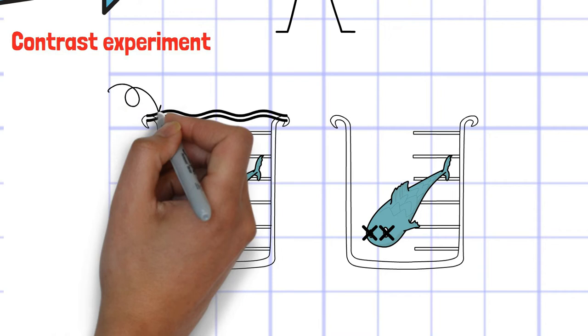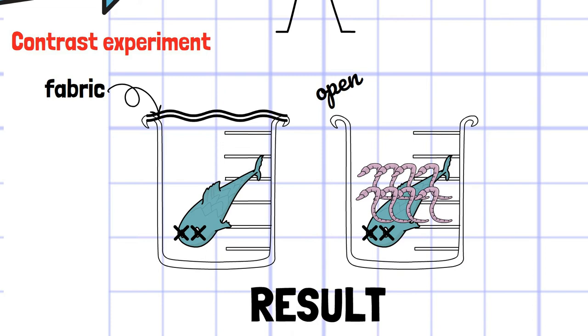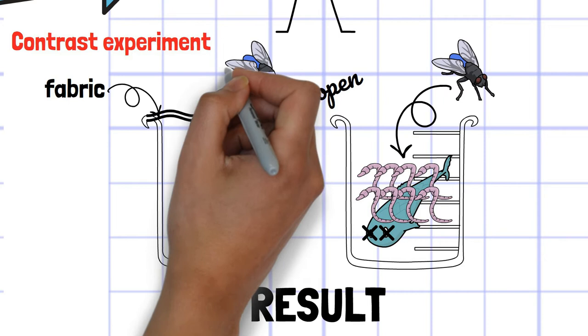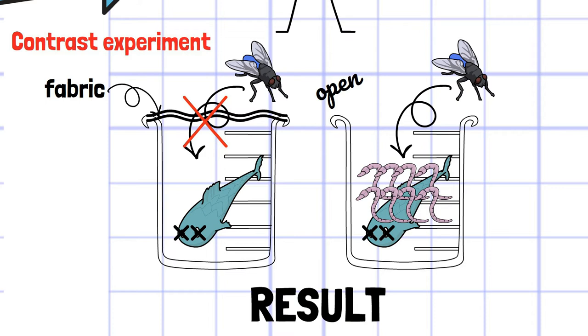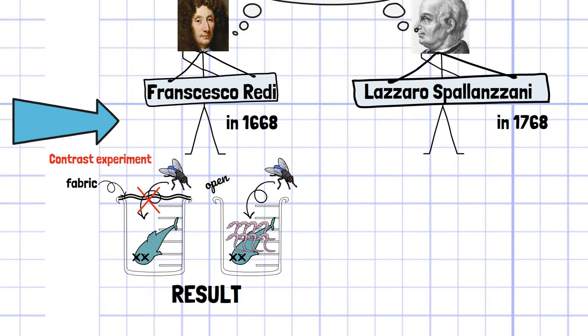As a result, maggots emerged from the open container, which was allowed to contact with flies, but not from the sealed container, which was covered with the fabric. Although this experiment only showed that maggots can emerge if they don't contact a fish, it opened scientists the door to falsify spontaneous generation.